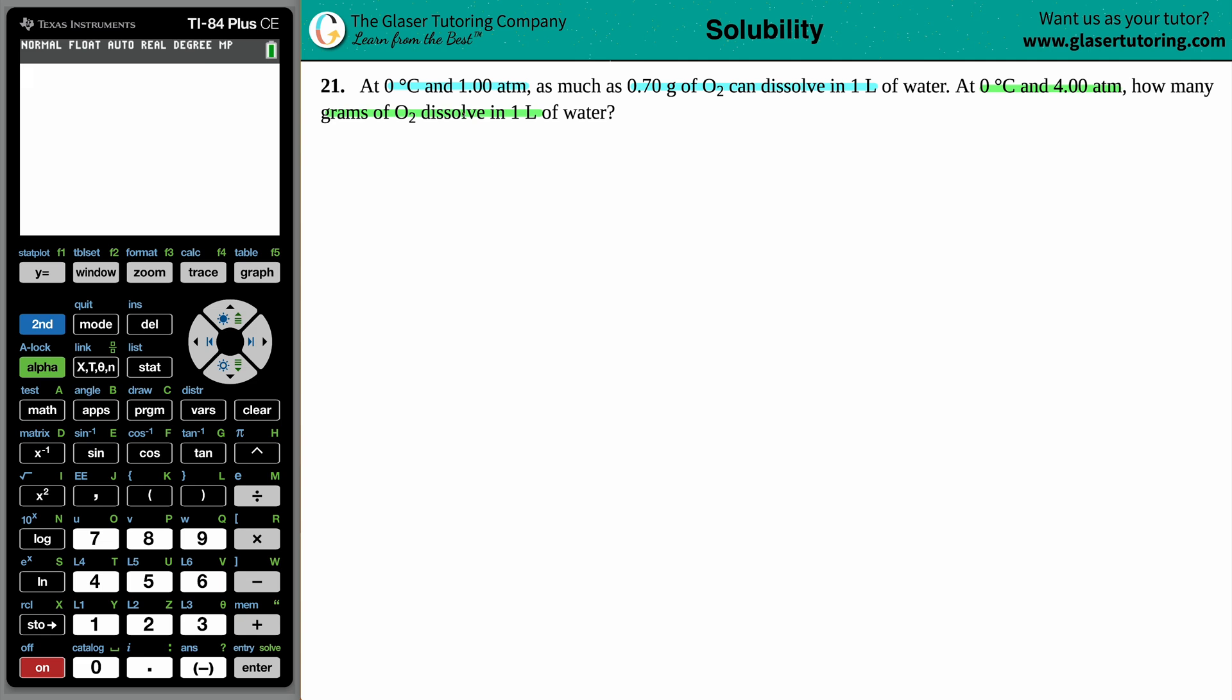So how many grams of O2 can be dissolved in one liter of H2O? It seems like we have this type of idea where you have kind of a before and an after, right? They give you a temperature, a pressure, a gram amount, and a volume that all go together, and then they're just switching some things up.